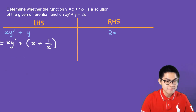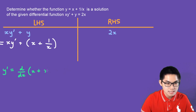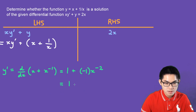Let's find y′. y′ is the derivative of x + 1/x, which we can write as x + x^(−1). This gives us 1 + (−1)·x^(−2), which simplifies to 1 − 1/x².